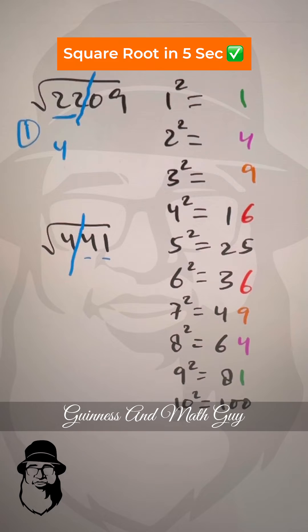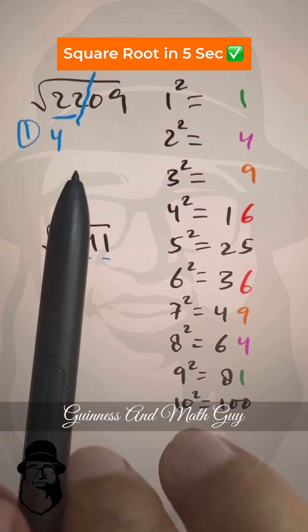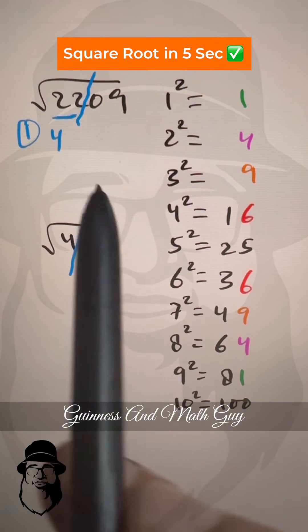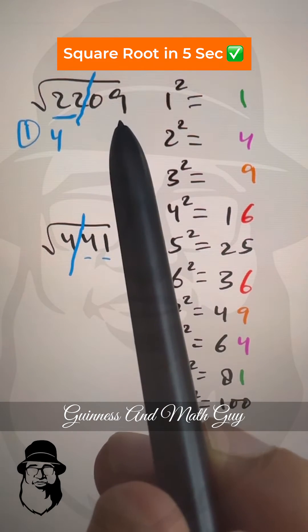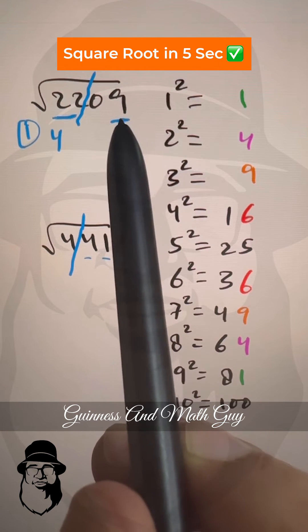That's the first part of the answer. For the second part, you look at the units digit of the number. It's 9.